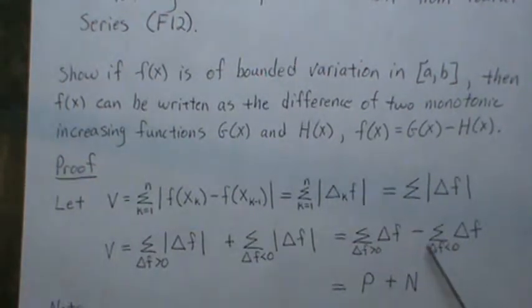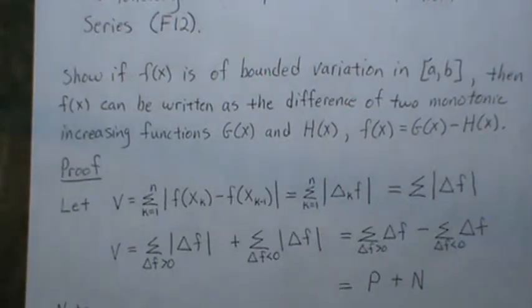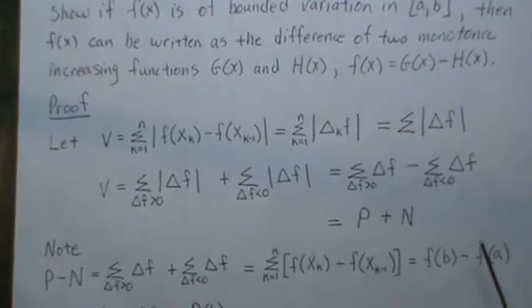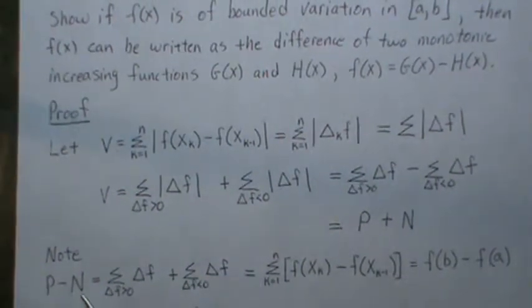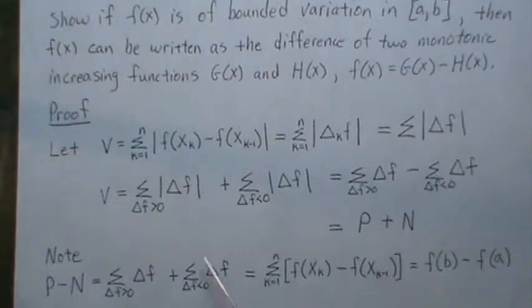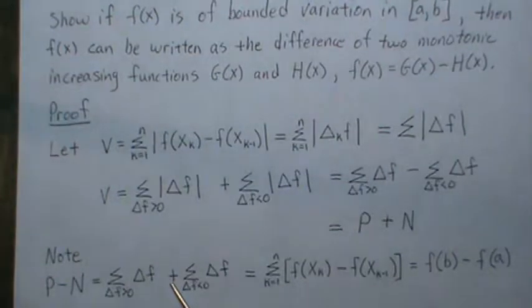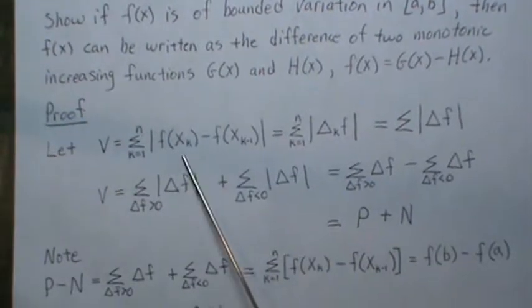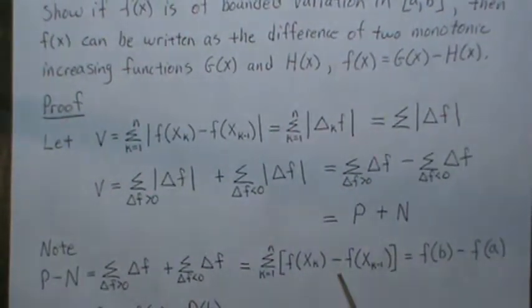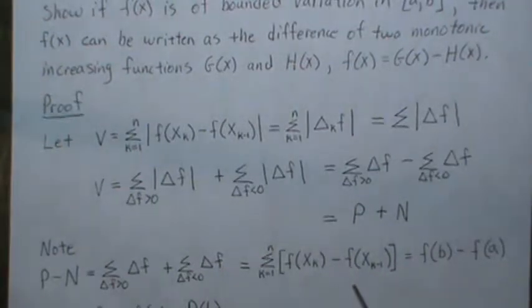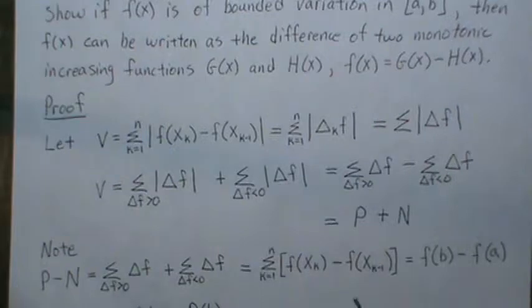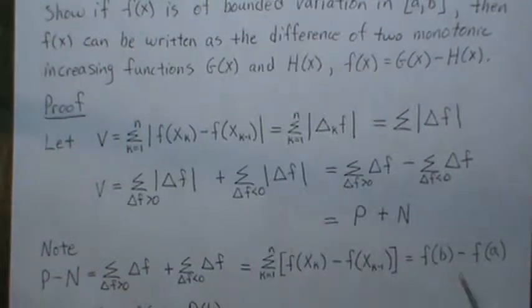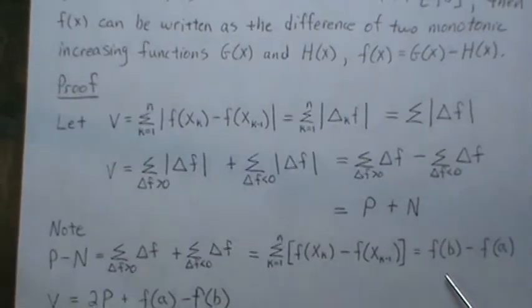We call this the variation v, which equals the positive component p plus the negative component n. Now let's look at p minus n. The p component is just this piece, and subtracting n changes the sign, so when we combine them into one sum with no absolute value signs we get a telescoping sum. Everything cancels but the first and last terms, giving us f(b) minus f(a).